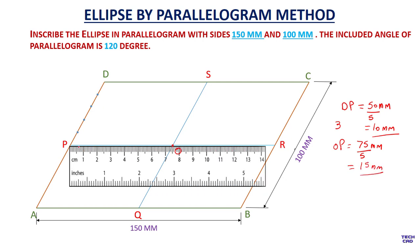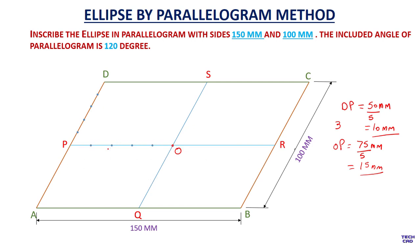I will take a scale and mark 15 mm points. Now I will give names to all the points: on the OP line this is 1-dash, 2-dash, 3-dash, and 4-dash, and on the PD line these are 1, 2, 3, and 4.